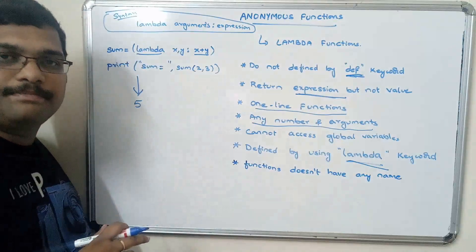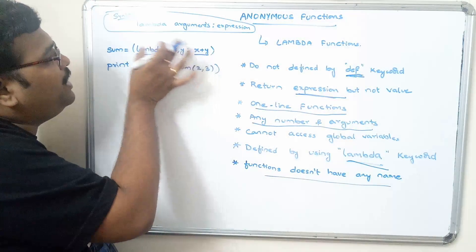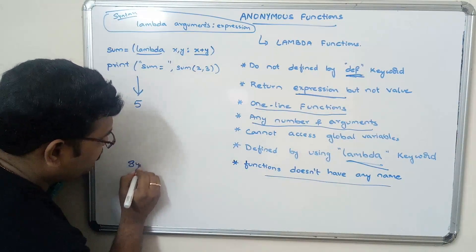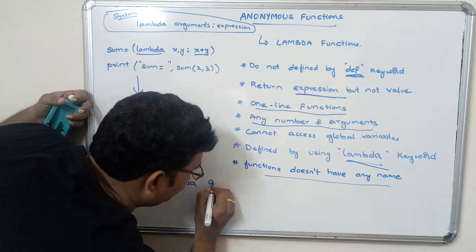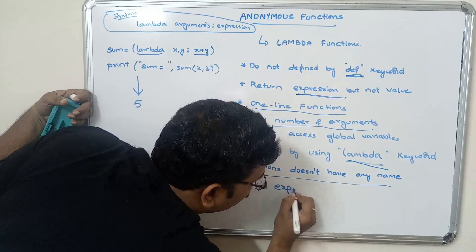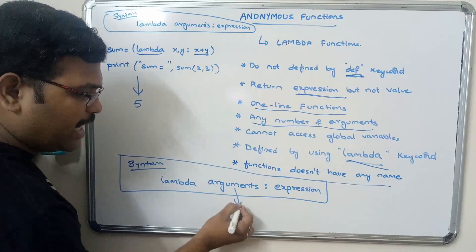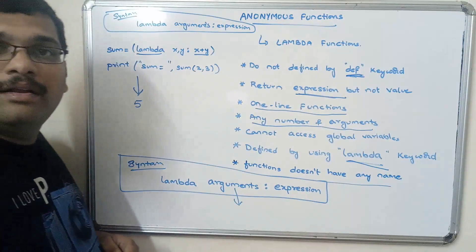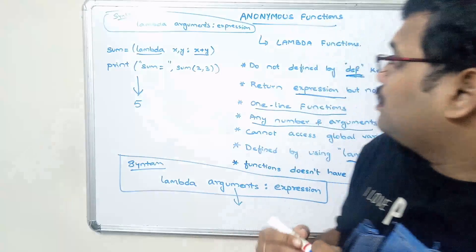This function does not have any name, but it can be assigned to a particular variable. The syntax is: lambda keyword, arguments, colon, expression. The arguments can be separated by commas and we can give any number of arguments. I hope you understood this simple concept — anonymous functions or lambda functions.